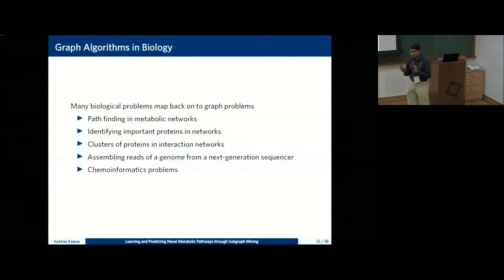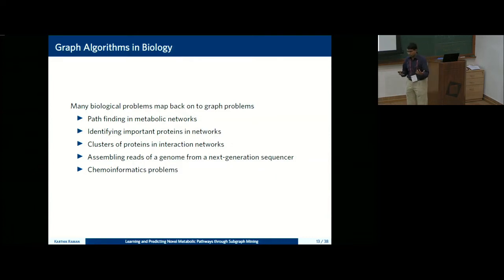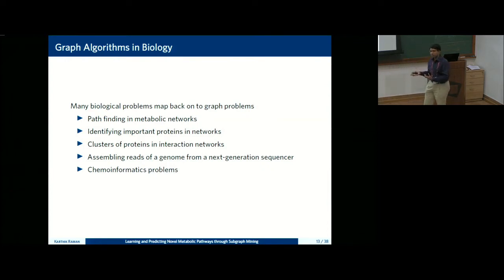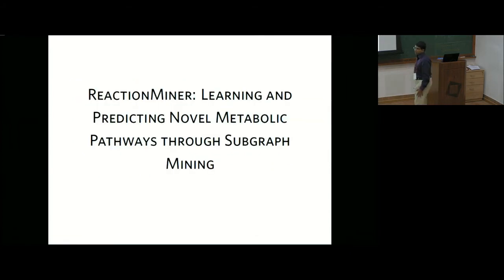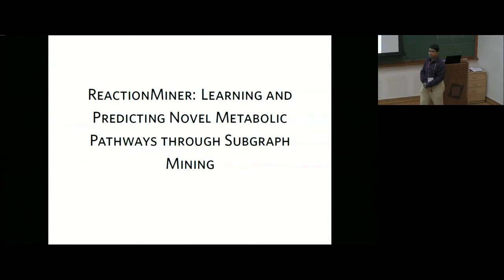Chemoinformatics — loosely what I'll talk about today — is more towards chemistry than bioinformatics. You can think of my talk as computer science meets biochemistry. We tried to learn and predict novel metabolic pathways through something known as subgraph mining or subnetwork mining.